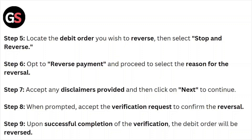Step number five: locate the debit order you wish to reverse, then select Stop and Reverse. Step number six: opt to reverse payment and then proceed to select the reason for the reversal. Step number seven: accept any disclaimers provided and then click on Next to continue.